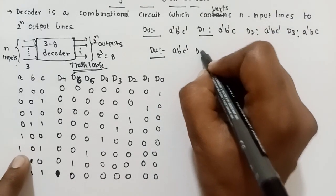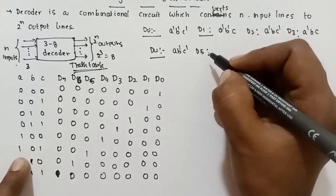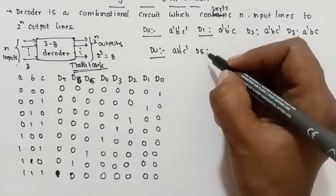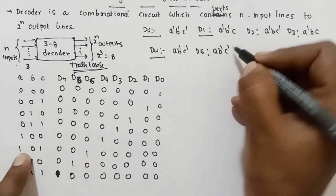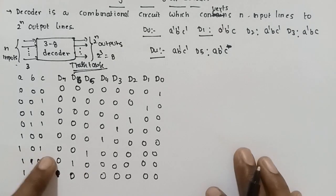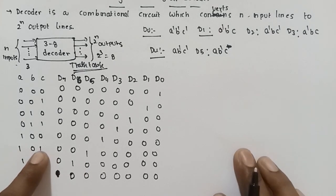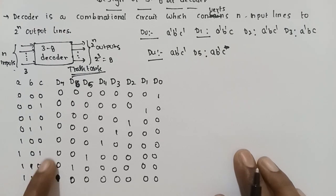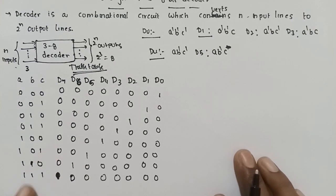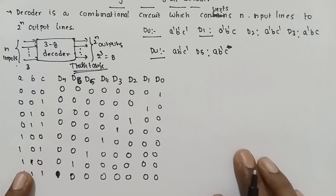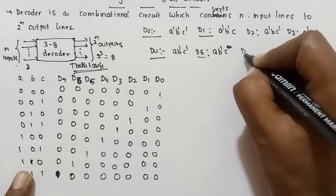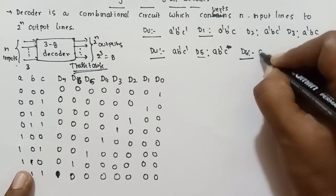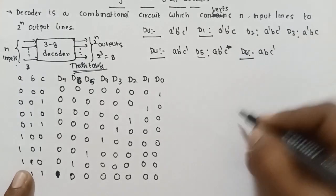D5 key: A B' C. Next D6 key: A B C'. D7 key: A B C. So we find the Boolean expression for each output.